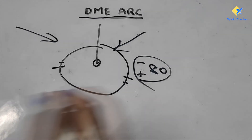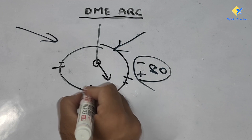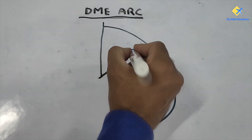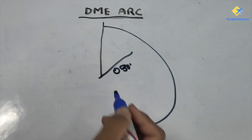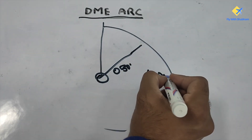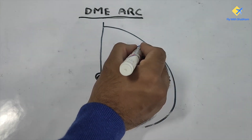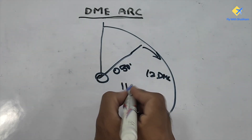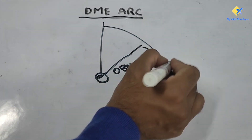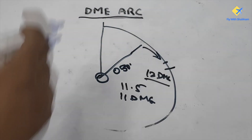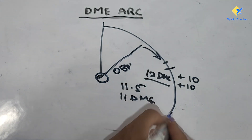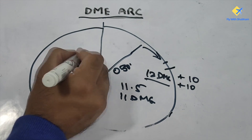The second scenario is where you are going outbound from a station and then joining the DME arc. Let's say you are going outbound on a heading of 030 — which is also the 030 radial from the station — and you will be intercepting a 12 DME arc. At approximately 11 or 11.5 DME you will turn right as per your aircraft speed to intercept the arc, and then the same plus 10 / plus 10 procedure follows for a right-hand DME, or minus 10 / minus 10 for a left-hand DME.